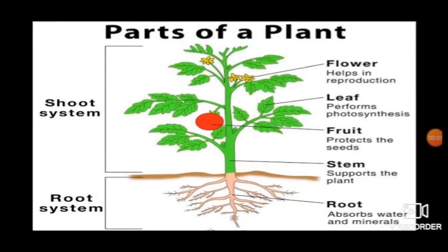Plants may be of different shapes and sizes, but they are made up of similar parts. Each part plays an important role in helping the plants to live and grow. A plant has two main parts: the root system and the shoot system.